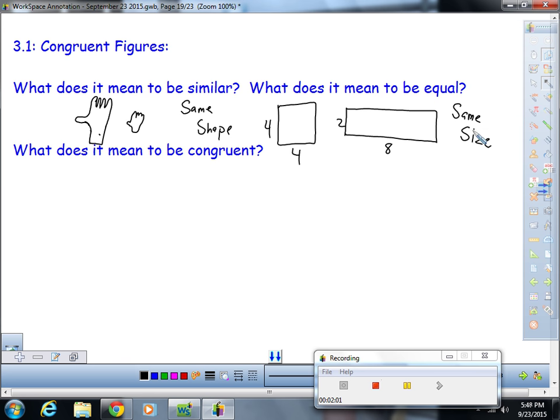And so what does it mean to be congruent? It means same shape and same size. So for almost all of us, our hands are congruent. If you held your left hand up to your right hand, they would be the exact same shape and the exact same size. And that means our hands are congruent to each other. My hand is similar to maybe your hand. Same shape, different size. Okay, let's move on.